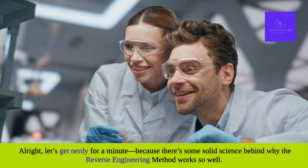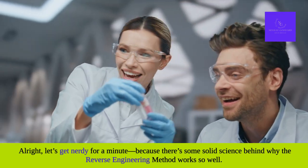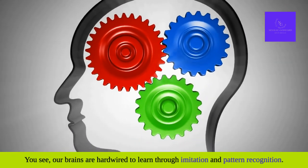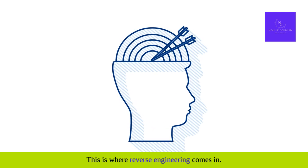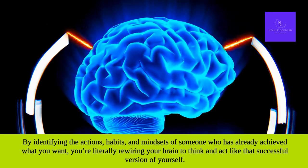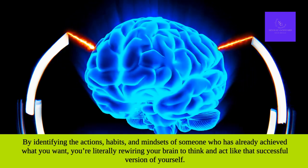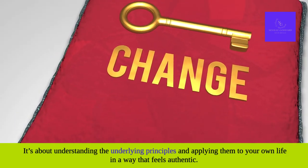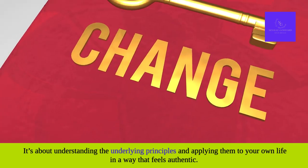Let's get nerdy for a minute, because there's some solid science behind why the reverse engineering method works so well. Our brains are hardwired to learn through imitation and pattern recognition. By identifying the actions, habits, and mindsets of someone who has already achieved what you want, you're literally rewiring your brain to think and act like that successful version of yourself. And it's not just about mimicking someone else's success — it's about understanding the underlying principles and applying them to your own life in a way that feels authentic.